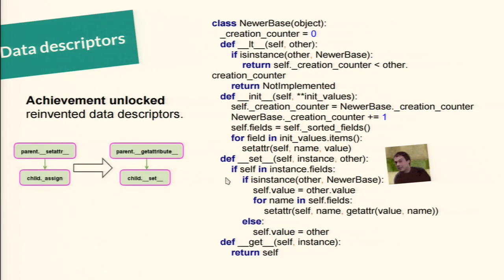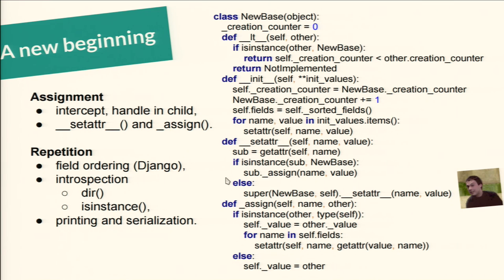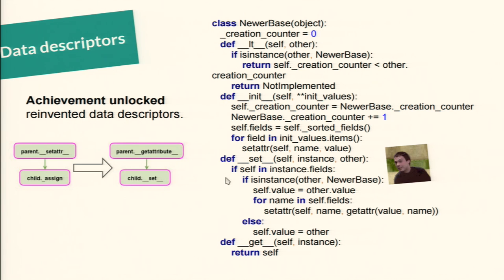It turned out I had almost invented something like data descriptors, but data descriptors just go in a different way. I had overridden the setattr magic method and called assign — what data descriptors actually do is have this mechanism within getattr and use set for setting the value inside the child. So set and assign change the functionality: getattr calls set, and set is in place of assign. This is the transformation that happened — I'm essentially using data descriptors.